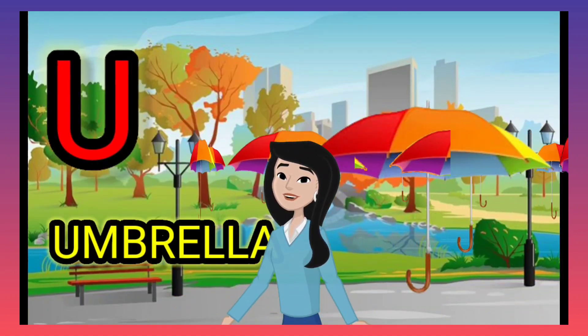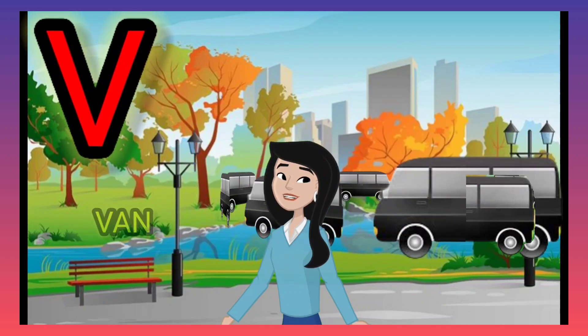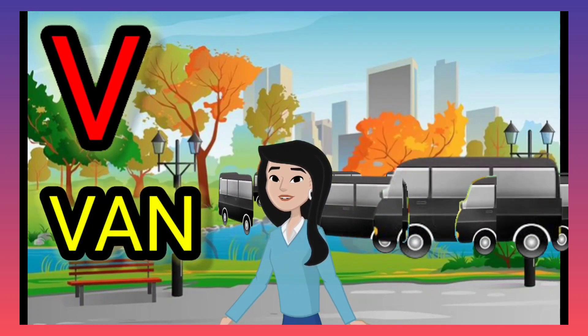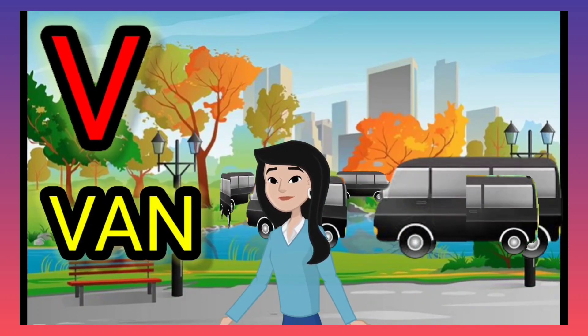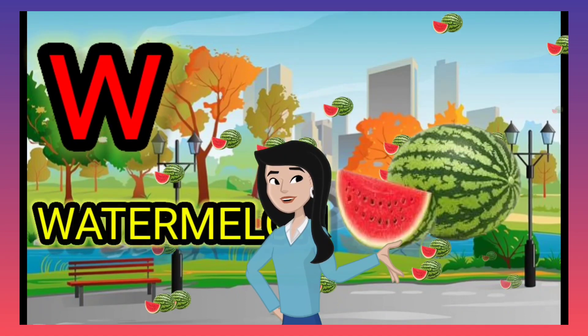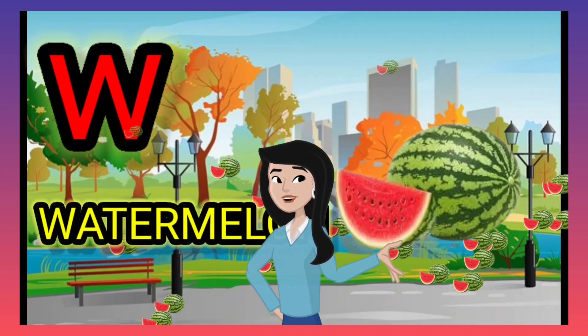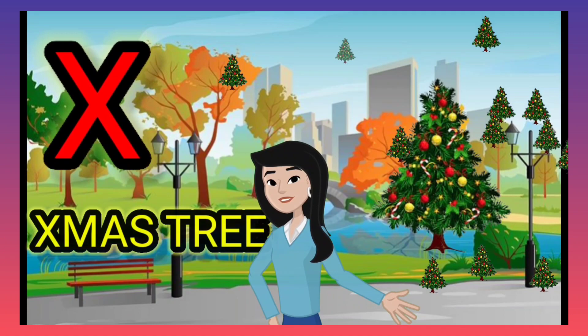U for umbrella. V for van. W for watermelon.